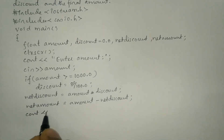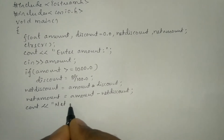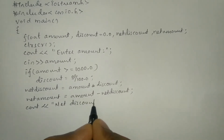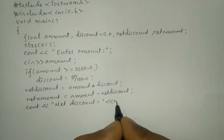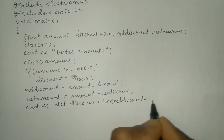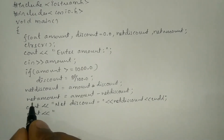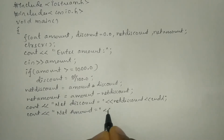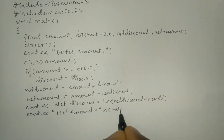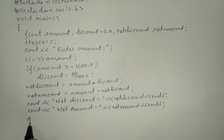Let us print the values stored in net_discount and net_amount using cout statements. cout << "net discount = " << net_discount << endl; Then cout << "net amount = " << net_amount << endl; Finally, write the getch() function and a curly closing brace.